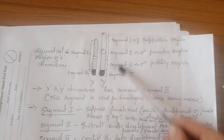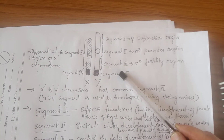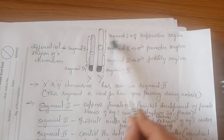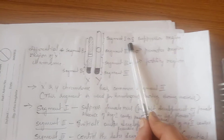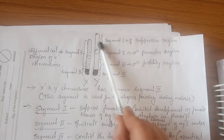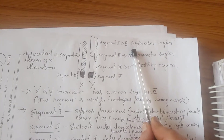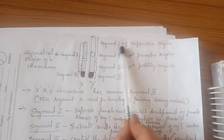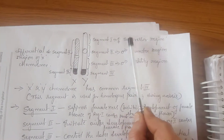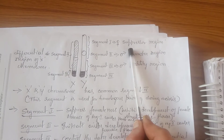Let us understand how each of these segments plays an important role in sex determination or male fertility. Segment 1, or region 1, actually suppresses femaleness — it inhibits the development of female structures in the flower. So if this segment is functional, it suppresses femaleness and inhibits development of female structures.